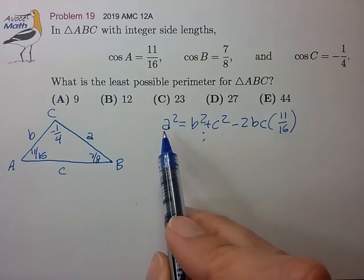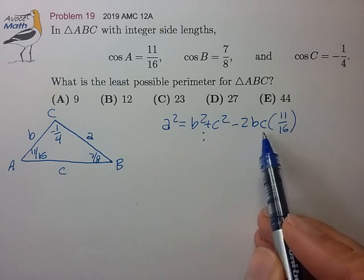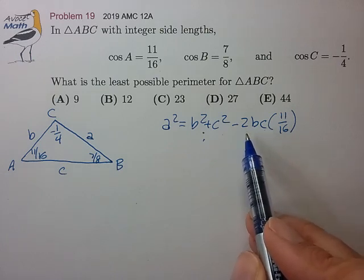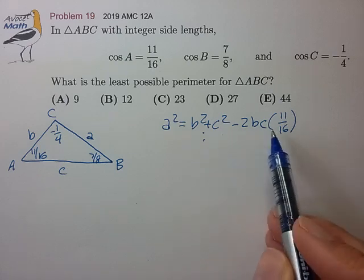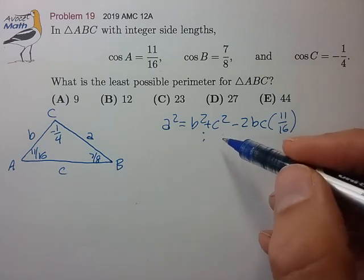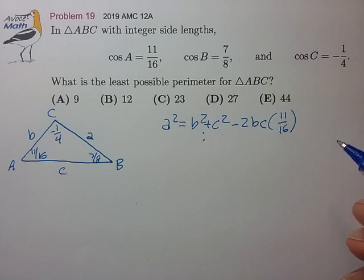And looking at this, I'm a little bit frightened. We have integers that are squares, we have these cross terms, which are always a pain with any kind of integer equation. This first equation all by itself kind of scares me. We're gonna have two more of these. So this doesn't look like the right way to go.